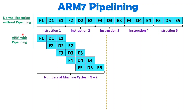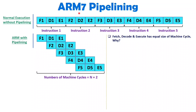You should have this question: how is it possible that fetch, decode, and execute are all having the same time interval? Only if they have the same time interval can you have a pipeline structure. If execution is having a larger time compared to decode, in that case you cannot have parallel execution. All these stages must have equal time period, then only you can have a pipeline structure. That is happening because of ARM7's structure.